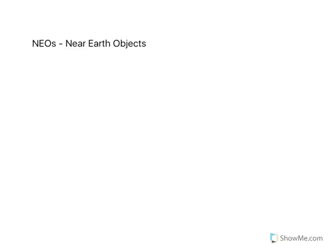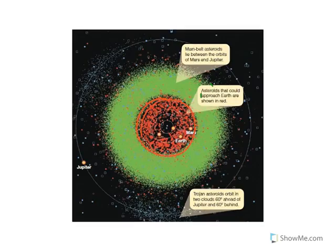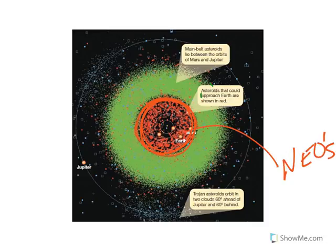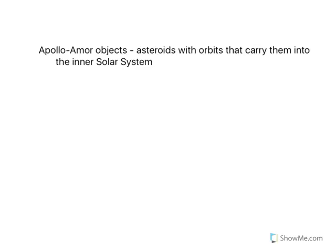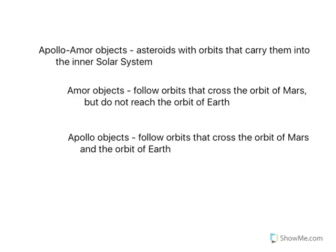Now let's look at NEOs. NEOs are near-Earth objects — they are asteroids, or possibly extinct comet nuclei, that have orbits that cross Earth's orbit. They can occasionally make close approaches to our planet. In this diagram from your textbook, the red circles are the NEOs, located in the inner solar system. NEOs also include objects called Apollo and Amor objects, which are asteroids with orbits that carry them into the inner solar system. Amor objects follow orbits that cross the orbit of Mars but do not reach the orbit of Earth, whereas Apollo objects follow orbits that cross both the orbit of Mars and the orbit of Earth.